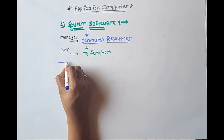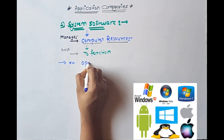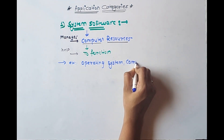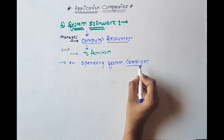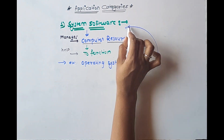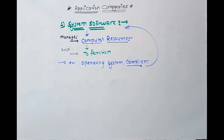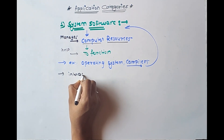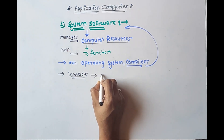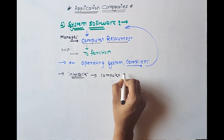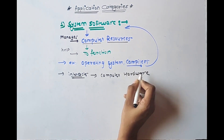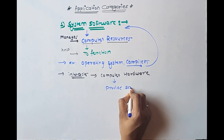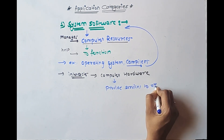The best examples of system software are operating systems and compilers. System software interacts with computer hardware and provides services to other programs.